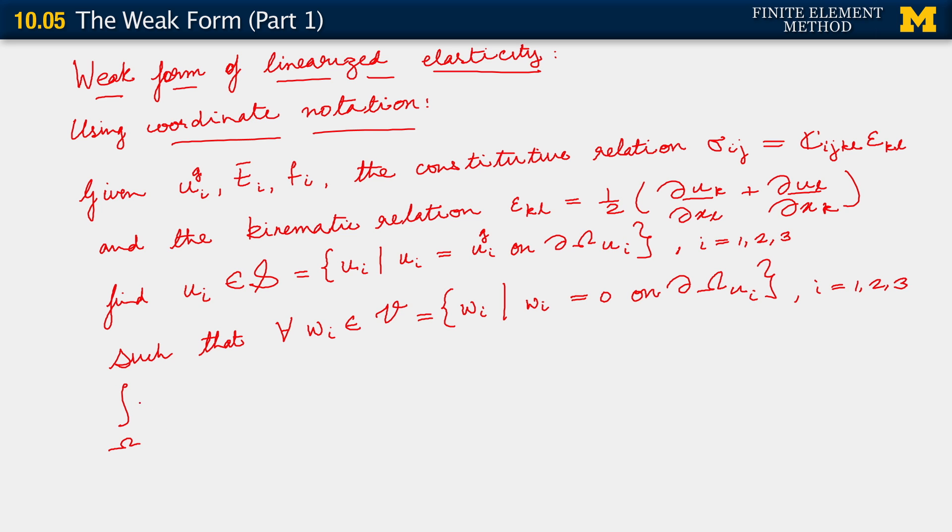Integral over omega w_i comma j sigma_ij dV equals integral over omega w_i f_i dV, plus, now here comes the rub, because of the fact that our traction boundary condition needs to be specified individually for each component. We need to straight away here have a sum i going from one to number of spatial dimensions, and of course we're doing this in three dimensions, of integral over the corresponding traction boundary of w_i t bar i dS.